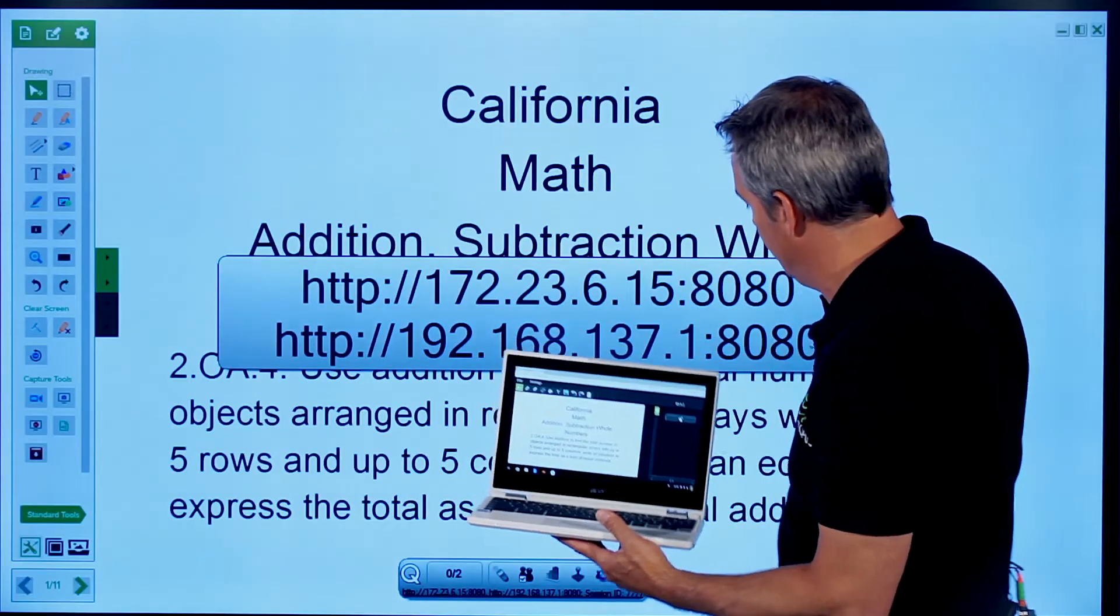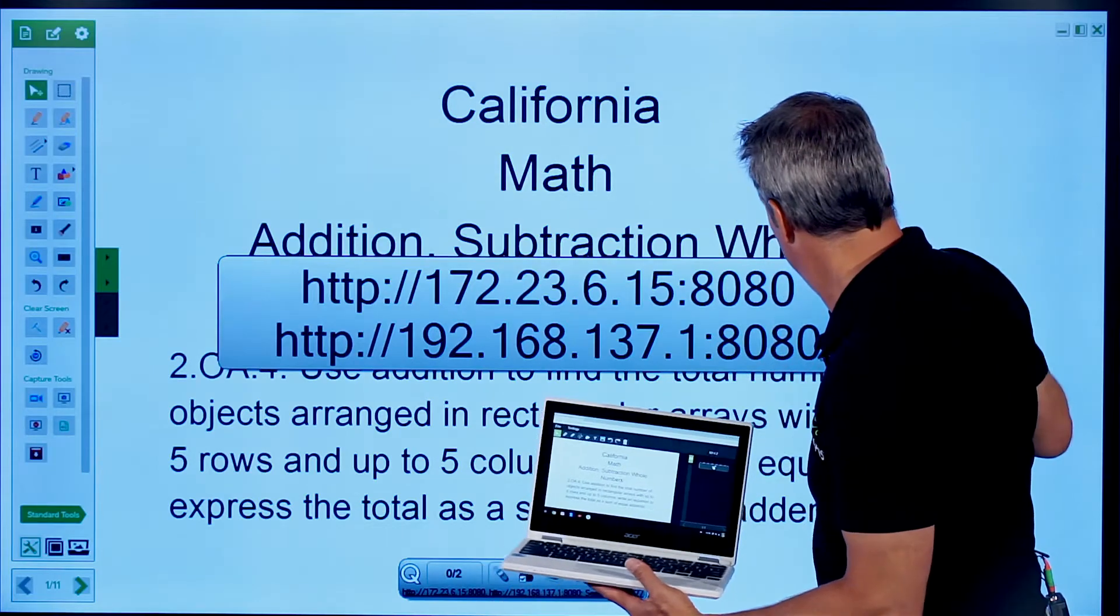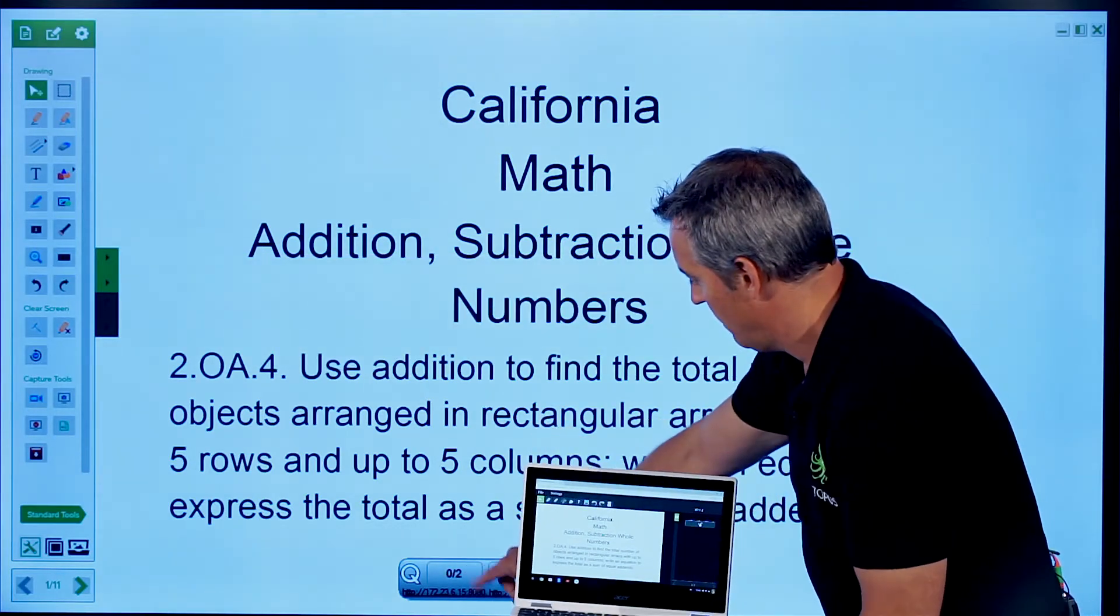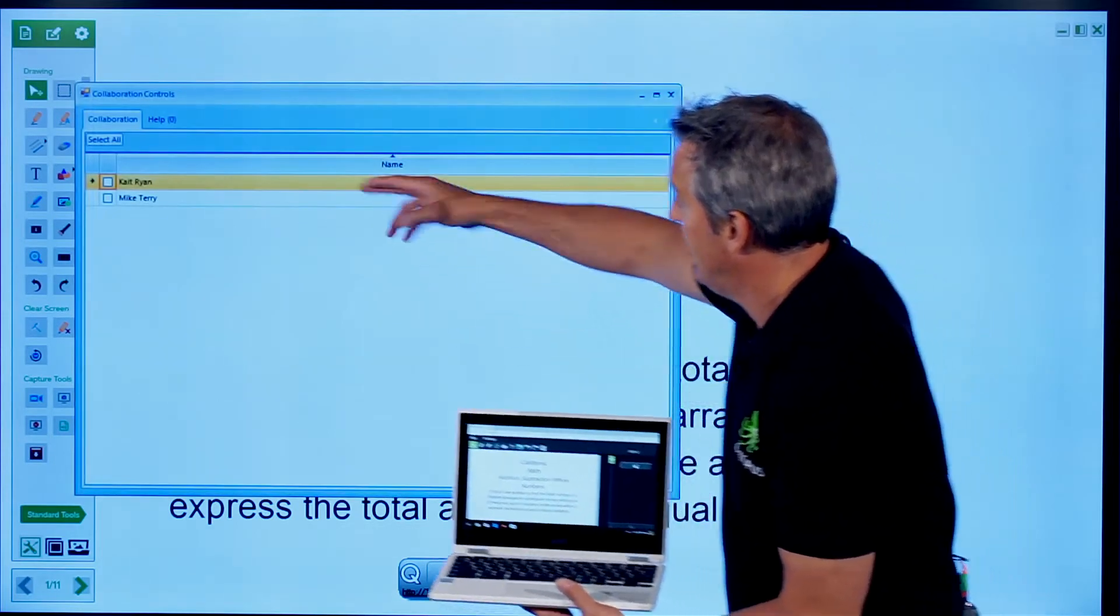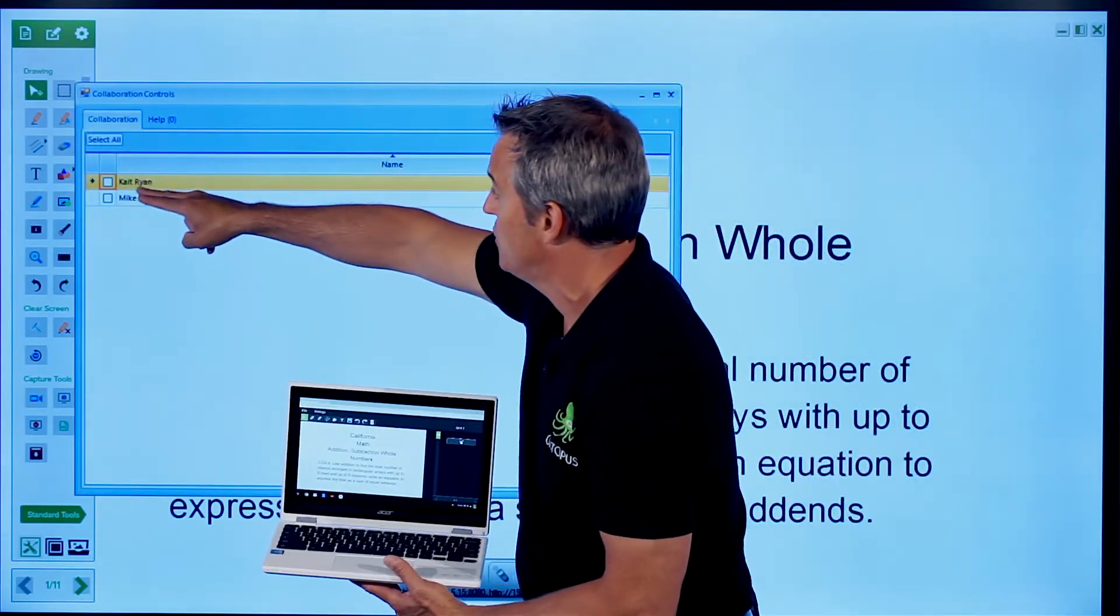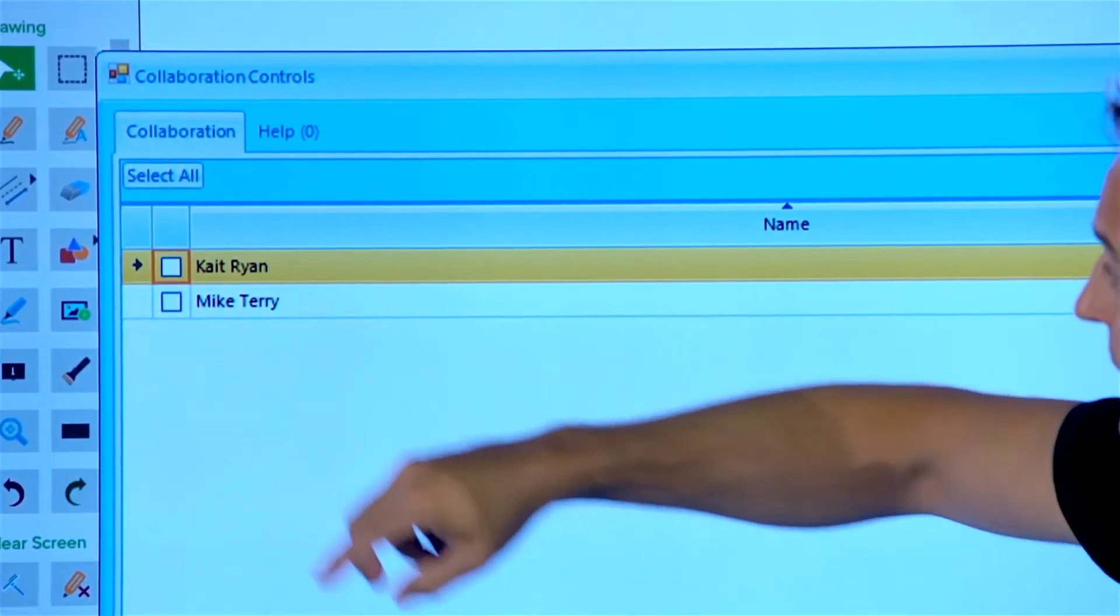And now I have two different students that have joined the session. If you look down here it's showing me zero of two students have responded. I can bring up this little class icon here and I can see who have joined. These are the students who have already joined my session. Both Kate and Mike have joined.